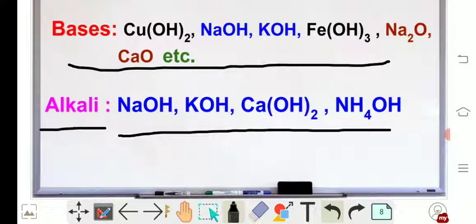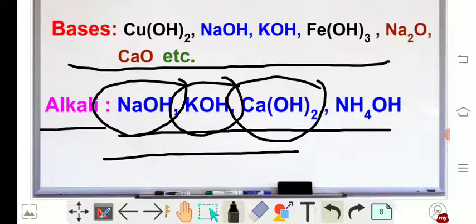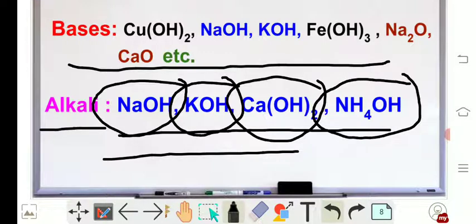Metal hydroxides are called bases. Let's see whether these are metal hydroxides or not. Sodium hydroxide — yes, metal hydroxide. Potassium hydroxide — also metal hydroxide. Calcium hydroxide — also metal hydroxide. So these three are metal hydroxides, meaning all these alkalis are bases. But let's look at ammonium hydroxide — although it is not a metal hydroxide...